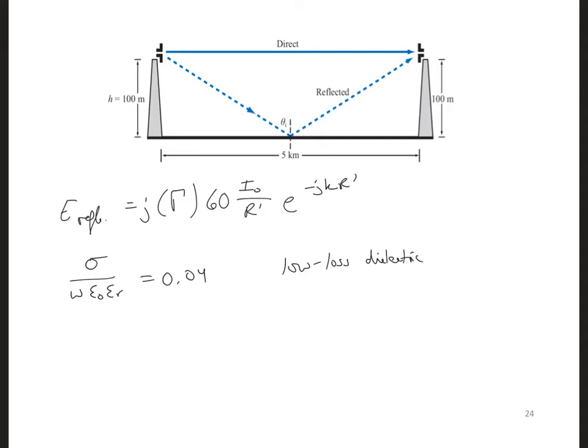From table 7-1 for a low-loss dielectric, the characteristic impedance for the ground, which we're going to call here material number 2 and the air is material number 1, then eta_2 is eta_naught over square root of 9 epsilon_R. We get 125.7 ohms.